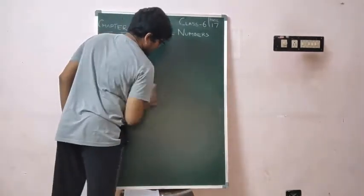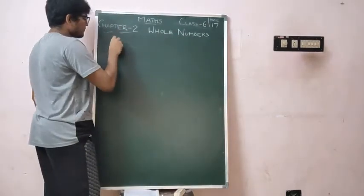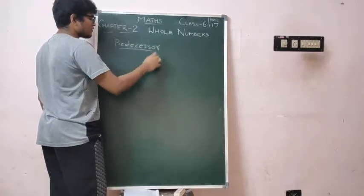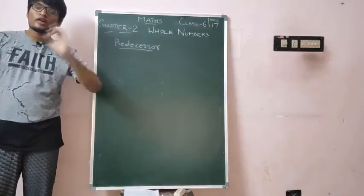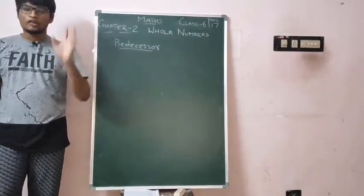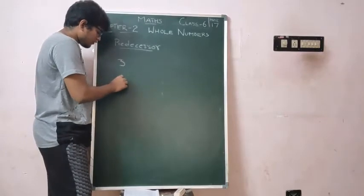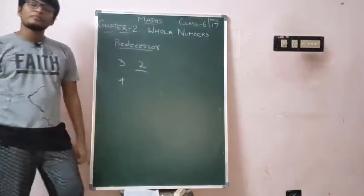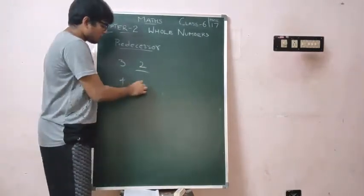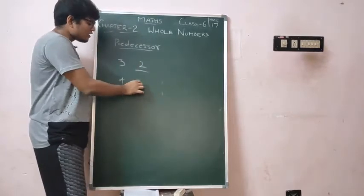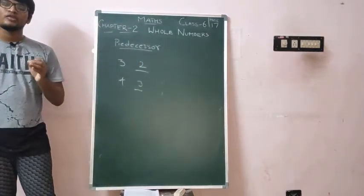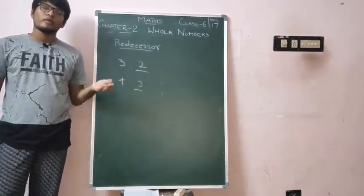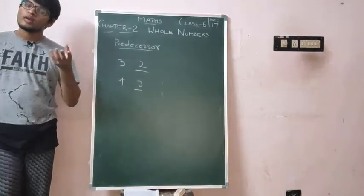Next one is the predecessor. What is the predecessor? The number that comes before a given number. If you have the number 3, what comes before 3? It is 2. And what comes before 4? It is 3. So 2 is the predecessor of 3, and 3 is the predecessor of 4. When asked to find the predecessor, write the number that comes before the given number.